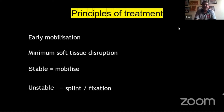The principles are very simple. You try and mobilize them as early as possible — stiffness is the greatest worry. You try to inflict as minimum a disruption of the soft tissue as possible. If there are stable configurations, you mobilize them early; if they're unstable, you need to splint them and fix them.